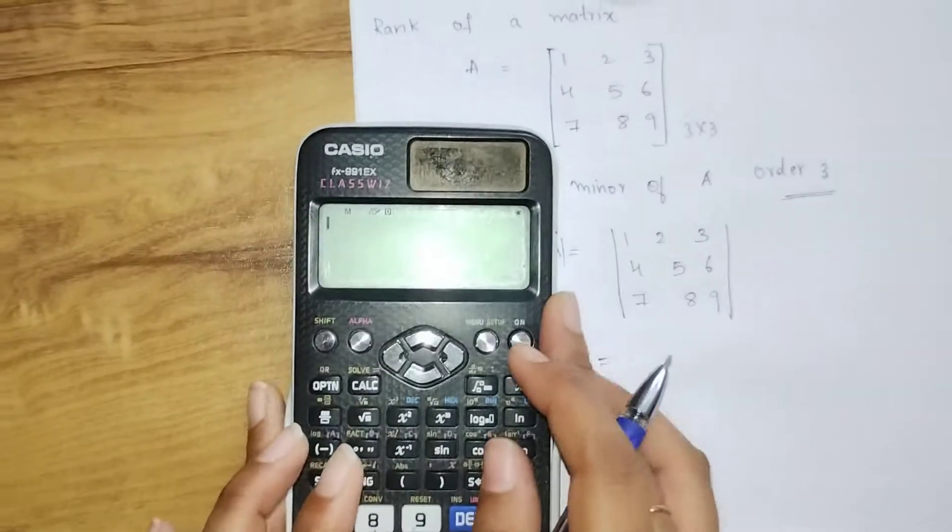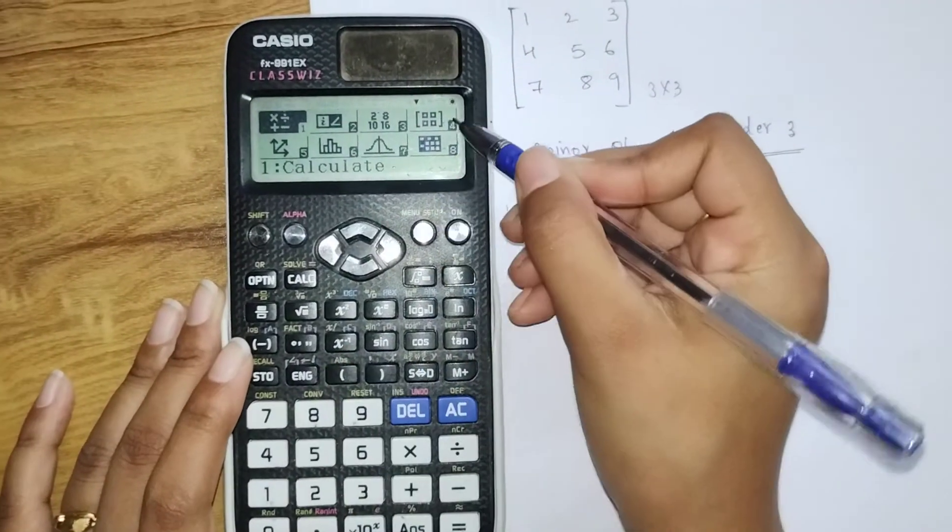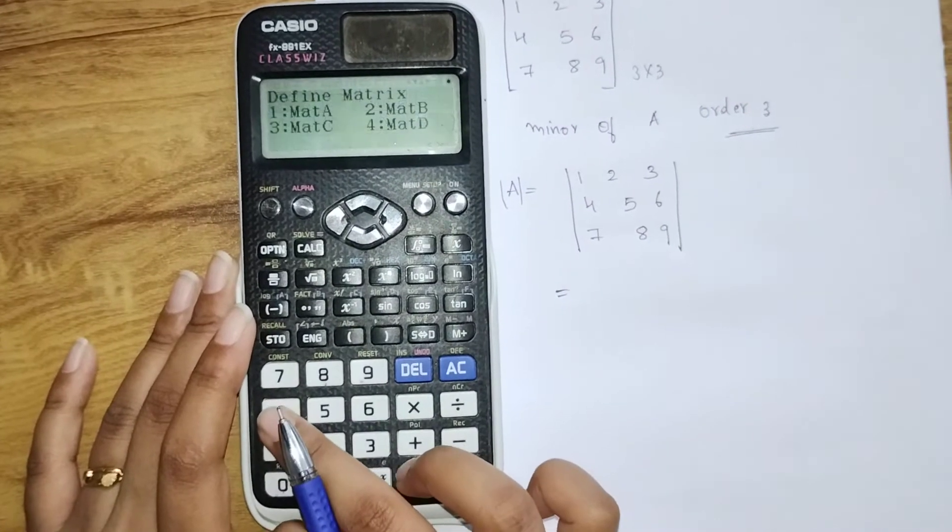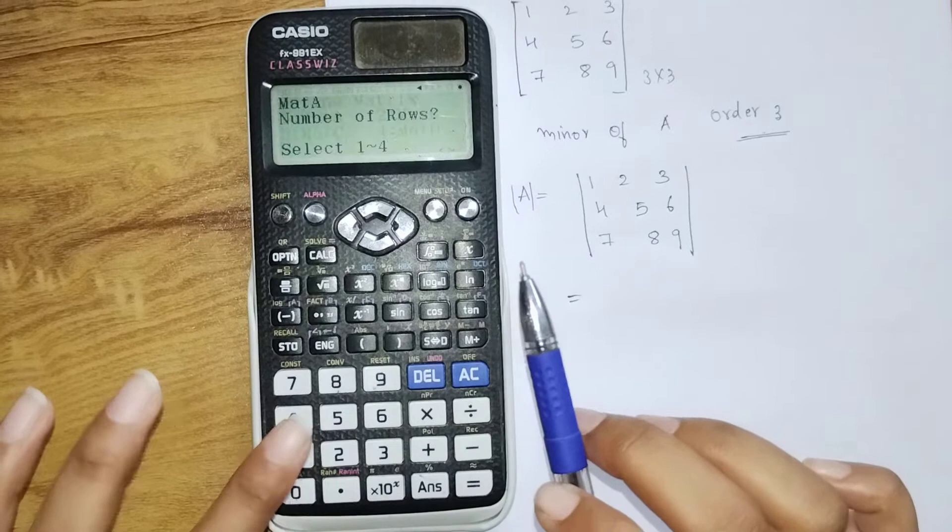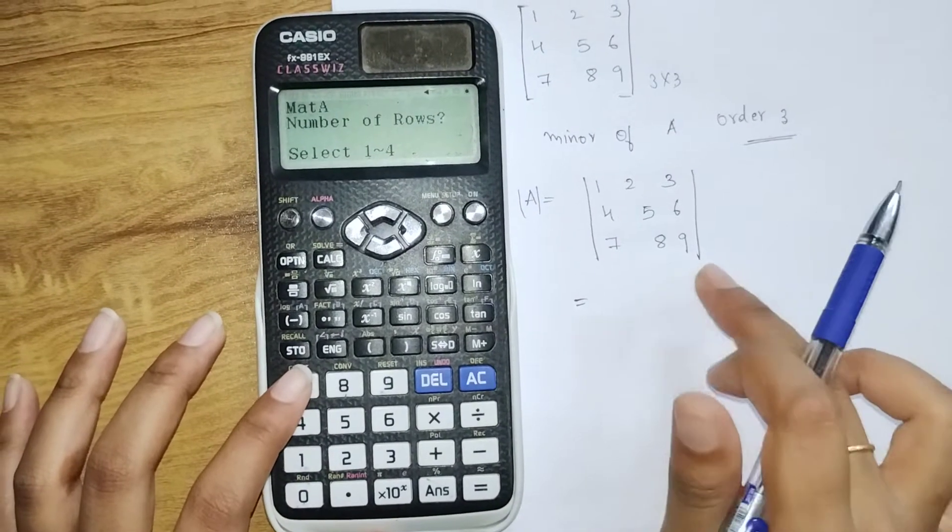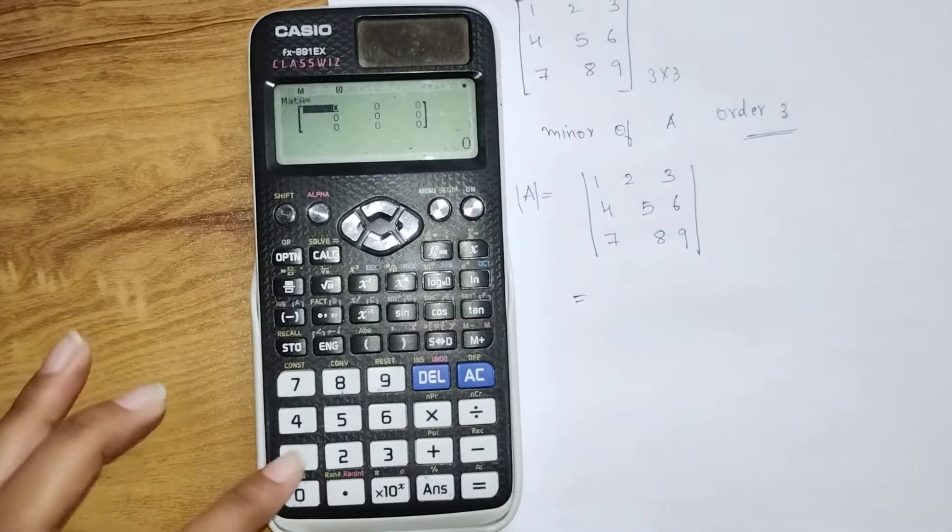Now we are going to use our Casio calculator. Go to Menu, Setup. This is the matrix option. Click on 4. We need to define our matrix - that is Mat A. Click on 1. How many rows and columns? It's a 3 by 3 matrix, so click on 3, again 3. Now define the matrix.